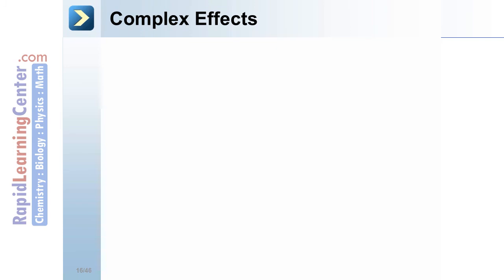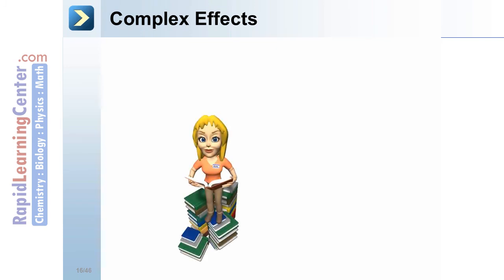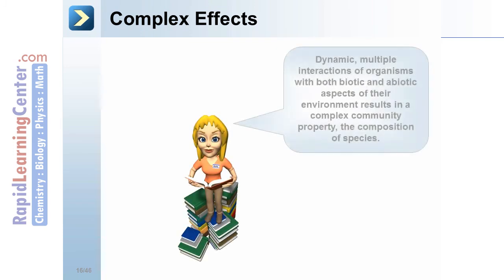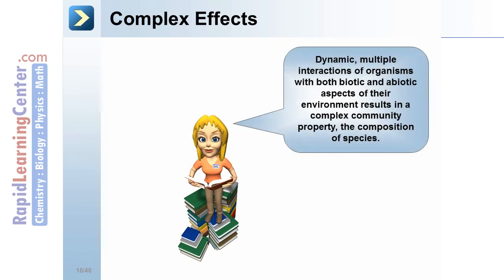The dynamic, multiple interactions of organisms with both biotic and abiotic aspects of their environment result in complex community properties, including the composition of species.